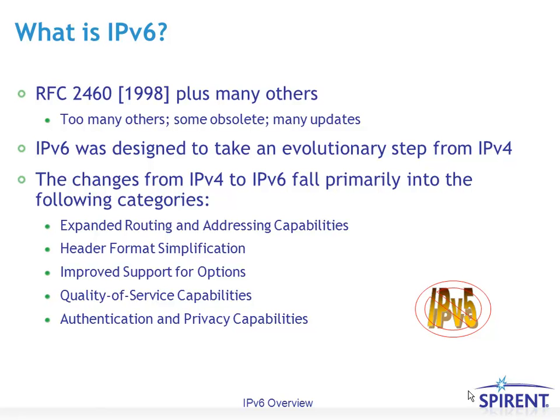So what is IPv6? In a nutshell, it's RFC 2460 — but of course there are many others. As the protocol has evolved, there have been many iterations, updates, and strategies that were conceived but never used. It's definitely an evolutionary step from IPv4. The idea was to take all the good things from IPv4, improve upon them, and get rid of the bad things. Expanding routing and addressing was the biggest reason for conceiving of IPv6.